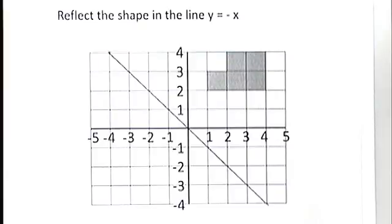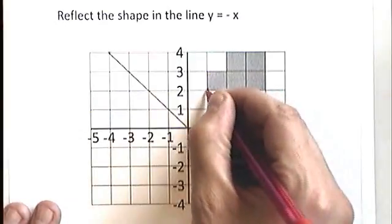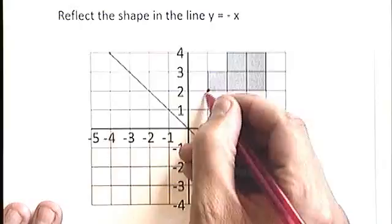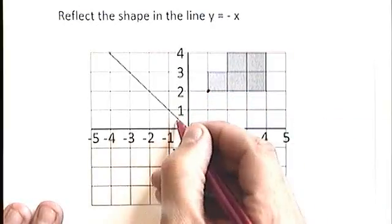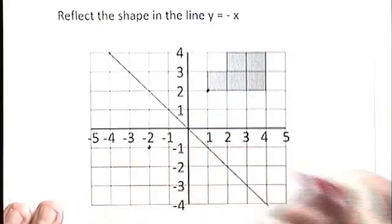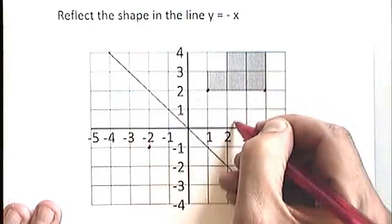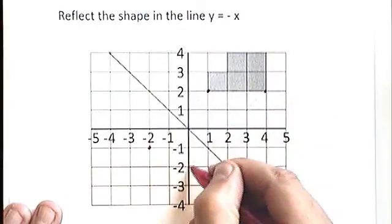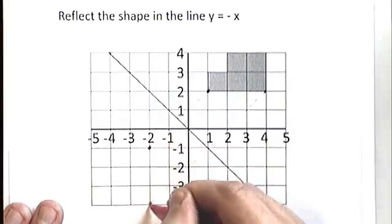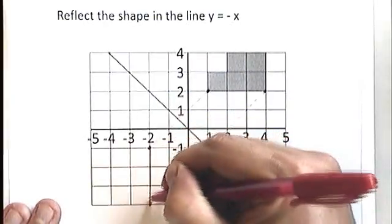I'm going to reflect this shape here. And I'm going to do this one entirely using counting of squares. So here we go. This shape, this point here, one and a half squares, one and a half squares goes there. This shape here, one, two, three squares, one, two, three squares. It comes down to that and I can draw the line in between those two.